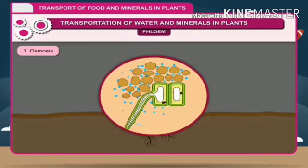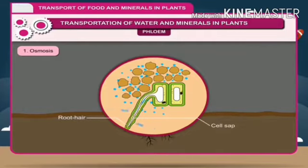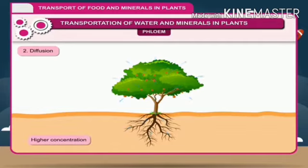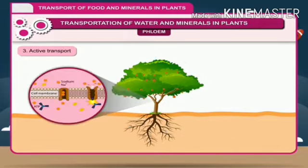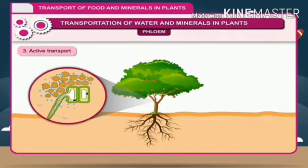Osmosis involves the movement of solvent molecules — water — from a region of higher concentration to a region of lower concentration through a semi-permeable membrane. In root hair cells, the cell sap is more concentrated than the surrounding capillary water; thus, water moves into the root hair cell by osmosis. Diffusion involves the movement of any molecules — solid, liquid, or gas — from a region of higher concentration to a region of lower concentration. Active transport involves the movement of substances from a less concentrated region by utilizing energy in the form of ATP. Mineral salts are absorbed by the roots through active transport.